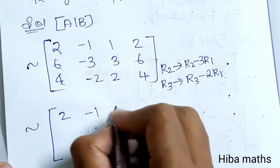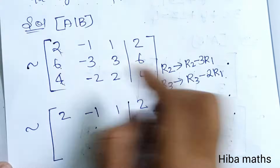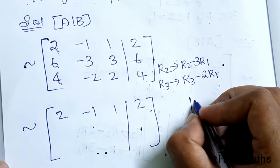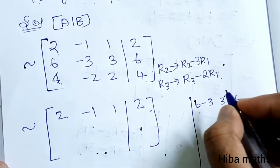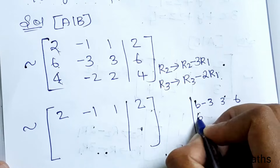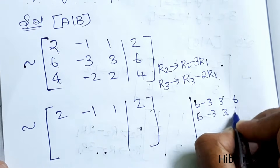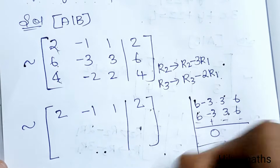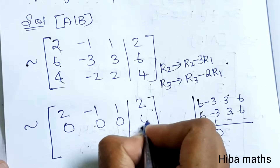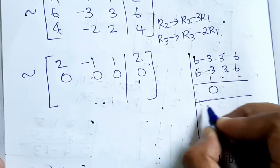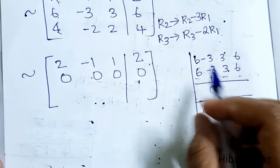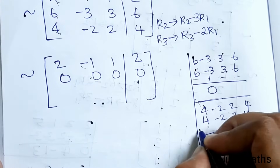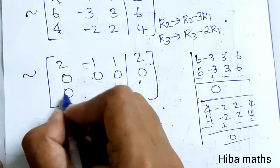After applying the row operations: for R2, 6 minus 3 times 2 equals 0, minus 3 minus 3 times minus 1 equals 0, 3 minus 3 equals 0, and 6 minus 6 equals 0. For R3, 4 minus 2 times 2 equals 0, similarly all entries become 0. So R2 and R3 are both full zero rows.